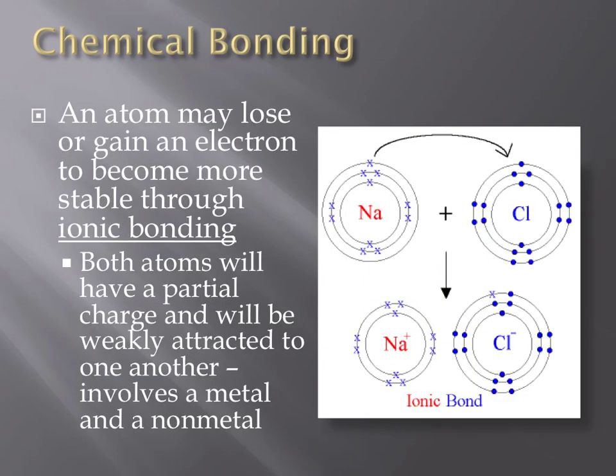Sometimes, instead of sharing electrons, elements will give up or take electrons to become more stable. When electrons are transferred, as shown in the picture on the right, where sodium gives an electron to chlorine to form sodium chloride or table salt, two ions are formed. The positively and negatively charged ions are slightly attracted to each other, forming a weak ionic bond. This type of bond always involves a metal, or element on the left side of the periodic table, and a non-metal, or element found on the right side of the periodic table.